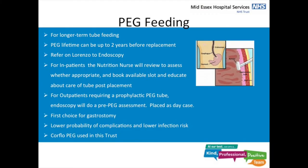PEG feeding is for longer-term use and the patient can be discharged with a PEG. It should be an MDT decision. PEG should be considered before RIG as it is less invasive, carries a lower infection risk, and requires less maintenance once in place. Possible contraindications include inability to pass the scope — for example due to a large tumour or trismus — poor prognosis, previous abdominal surgery or scars, ethical issues, obesity and hernias. The dietitian and nutrition nurse can advise on this.